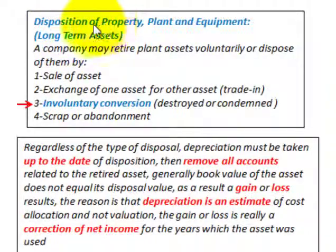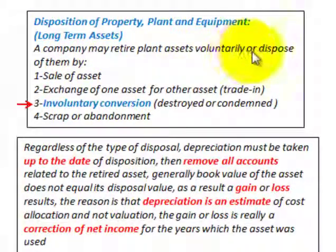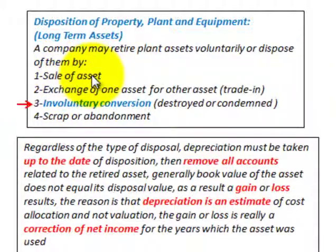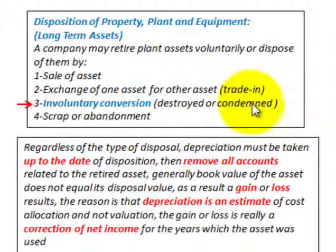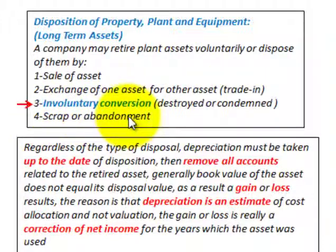What we're going to be looking at here is the disposition of property, plant, and equipment — those are long-term assets. A company may retire plant assets voluntarily or dispose of them by one of four ways: the sale of an asset, the exchange of one asset for another like a trade-in, an exchange of assets between companies, an involuntary conversion where property is destroyed or condemned, or scrapping and abandoning the property.